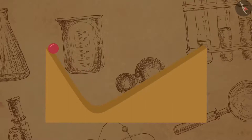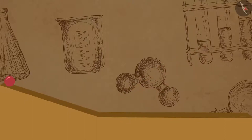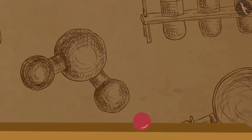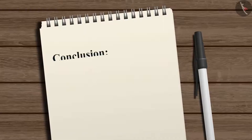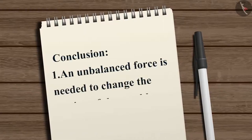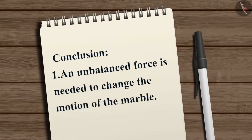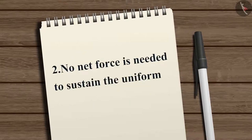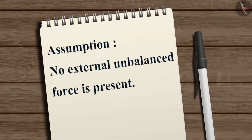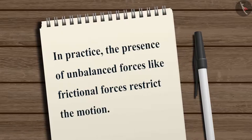If the angle of inclination of the right plane was decreased, the marble would go further to reach the same height from which it was released. If the slope is ultimately reduced to zero, the marble will move forever to reach that height, since the unbalanced forces working on the marble become zero. Hence, an unbalanced force is needed to change the motion of the marble, but no net force is needed to sustain its uniform motion, assuming no external unbalanced force is present.